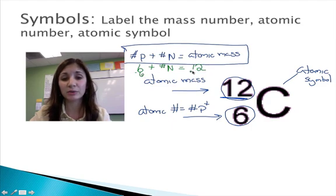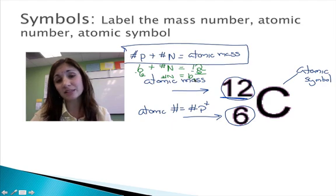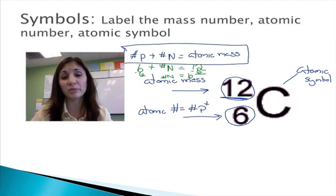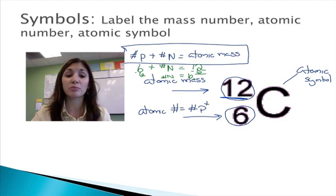Well, if I subtract 6 from both sides of the equation, I'm going to get my number of neutrons, and I can see that my number of neutrons, in this case, also equals 6. So knowing the atomic mass and the atomic number, which are always available to you on the periodic table, you can interpret a lot of important information about a particular atom.